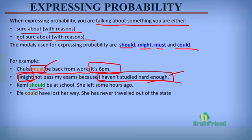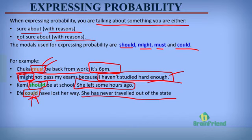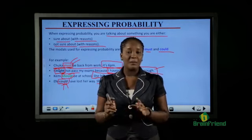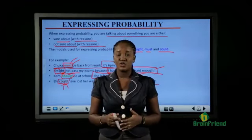Kemi should be at school — we are sure because she left some hours ago, and the modal verb here is should. Ifa could have lost her way — could is the modal verb — because she has never traveled out of the state. So must, might, should, and could are used to express probability, whether you are sure or not sure of something, but you must always have reasons to support your statement.